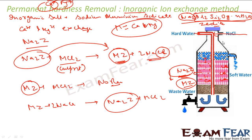So to summarize: hard water comes in, it reacts with zeolite, the zeolite traps the calcium and magnesium ions, and you get fresh water out. After some time the zeolite is exhausted — it becomes CaZ or MgZ — and can no longer be used. We then stop the process, sprinkle NaCl solution through the zeolite to return it to its active Na2Z state, and then the water filtering process starts again. The waste water from the regeneration step is discharged.